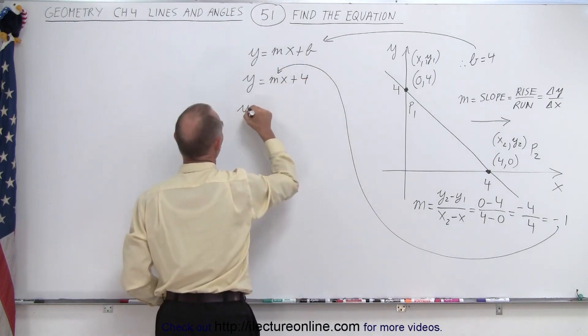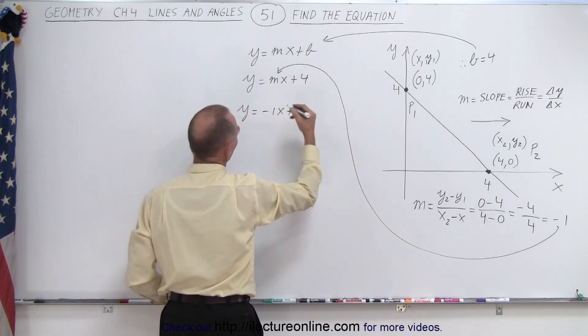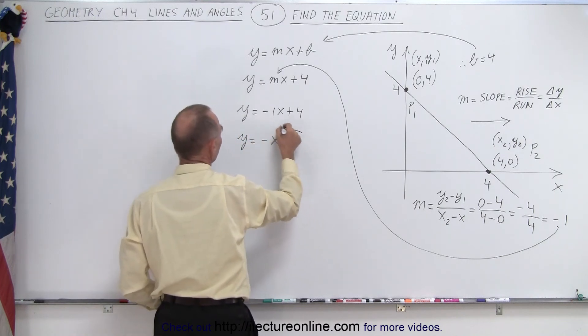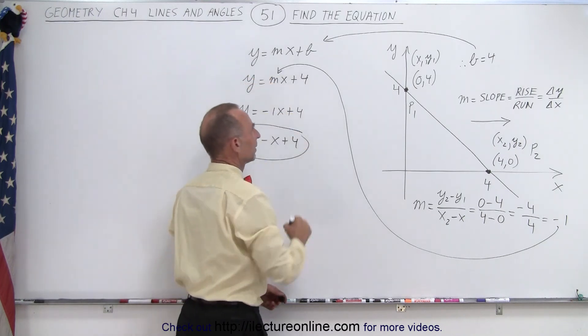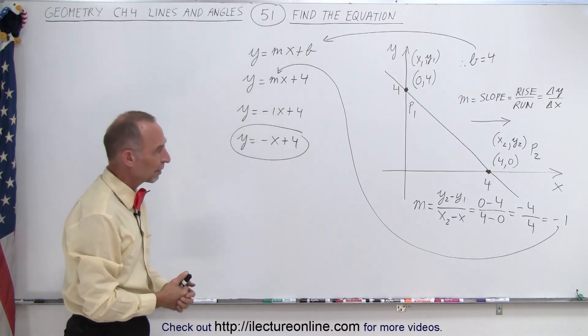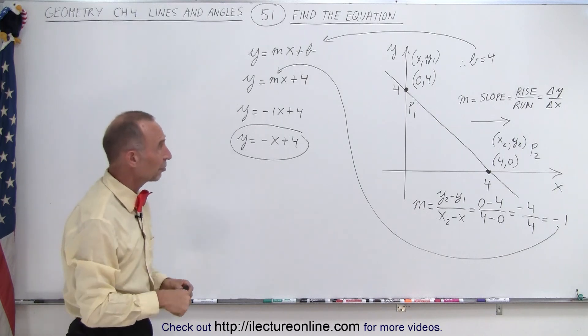And now we have y equals negative 1x plus 4, or you could simply write y equals negative x plus 4. We don't have to write the 1. And there, that's the equation of the line that we were looking for, based upon what was given to us graphically. And that's pretty well the methodology.